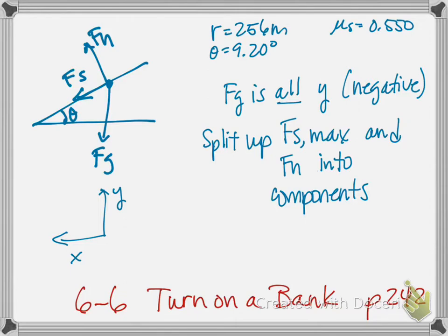As an example, the corners at the Indianapolis Motor Speedway are banked by 9.20 degrees. The radius of each corner is 256 meters. We're going to find the fastest speed possible if the coefficient of static friction is 0.550. So here's all we know up here in the top right corner and we're going to determine the maximum speed possible here.